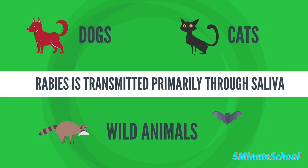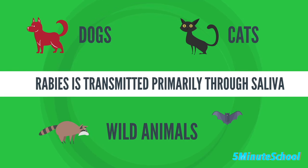Rabies virus is primarily transmitted to humans through the saliva of infected animals, most commonly dogs, cats, and wild animals such as raccoons, skunks, and bats.